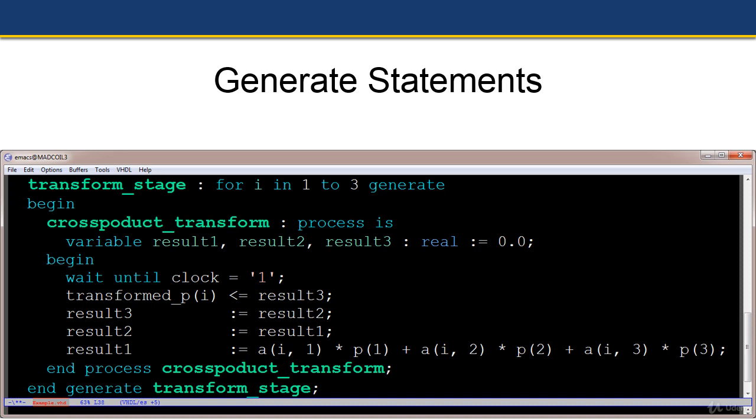own local variables result1, result2, and result3, which are real and initialized to 0. The sequential statements that follow use inputs p1, p2, p3, and the two-dimensional matrix a. This basically does a cross product transformation of two different matrices.